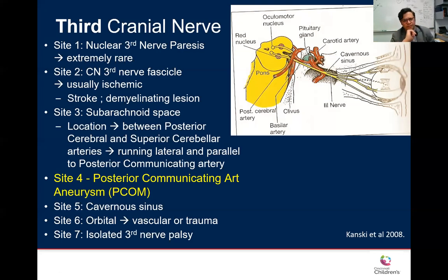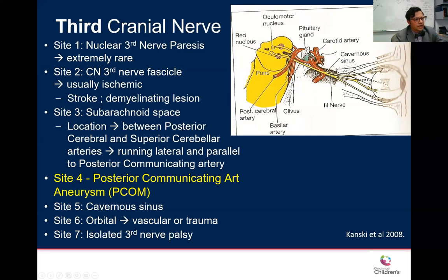In the subarachnoid space, the most concerning cause is the posterior communicating artery aneurysm — this presents as an isolated third nerve palsy with pupil involvement, often with severe headaches. The nerve runs between the posterior cerebral artery and the superior cerebellar artery, lateral to the posterior communicating artery — that's where we're most concerned about aneurysm. Then it enters the cavernous sinus, and goes into the orbit where it divides into superior and inferior divisions.